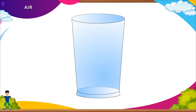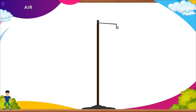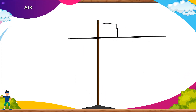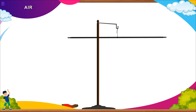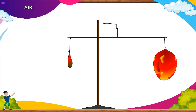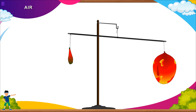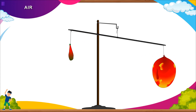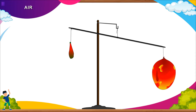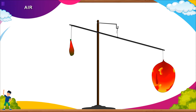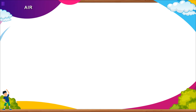Here is an activity showing that air has weight. Hang a scale from its center by a piece of string so that it balances properly. Take two balloons of the same size and blow up one of them. Tie the balloons to either end of the stick. The air-filled balloon is heavier, so we say air has weight.